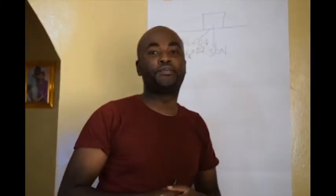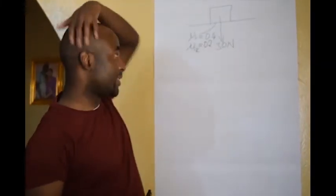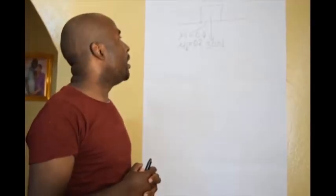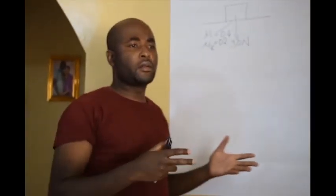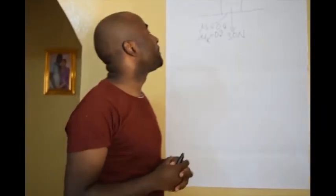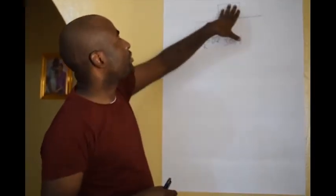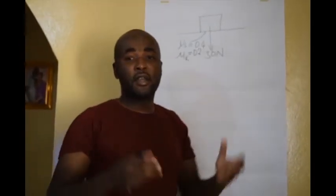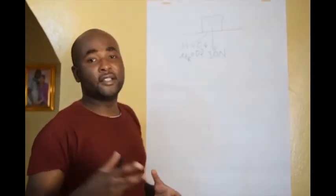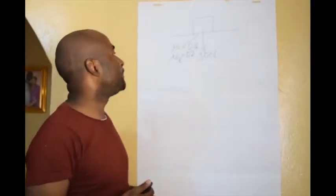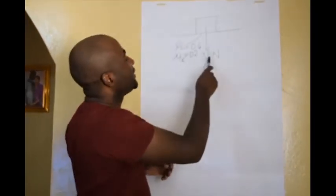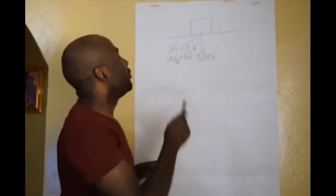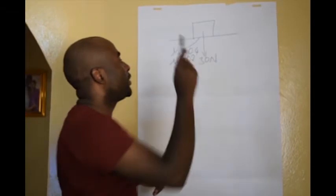Good afternoon guys. Today we'll look at this example just to understand the concept of friction. We have a box of bananas weighing 13 newtons. The coefficient of static friction, mu S, is 0.4 and mu K is 0.2.